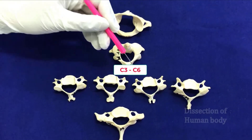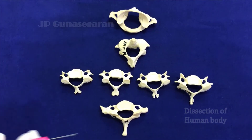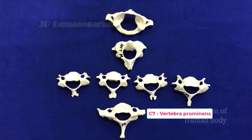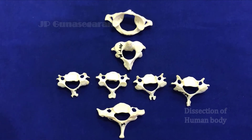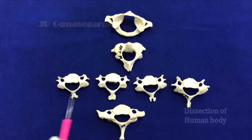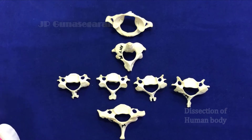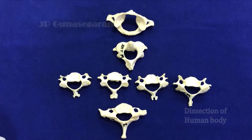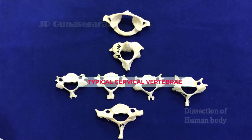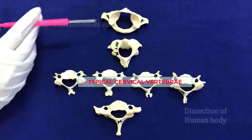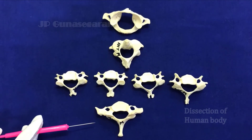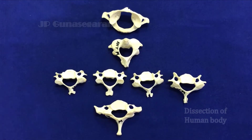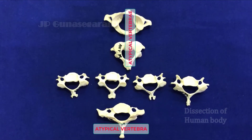This is C3, C4, C5, and C6 cervical vertebrae. This is the seventh cervical vertebra, also called vertebra prominens. C3 to C6 vertebrae look almost similar and share many common features, so these four vertebrae are called typical cervical vertebrae. Whereas C1, C2, and C7 have some major differences from the typical vertebrae, so C1, C2, and C7 are called atypical cervical vertebrae.